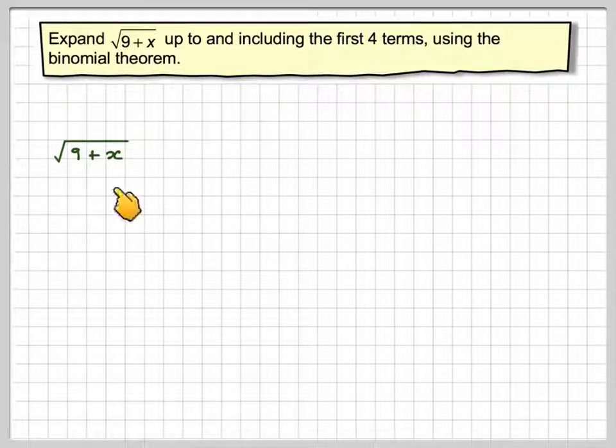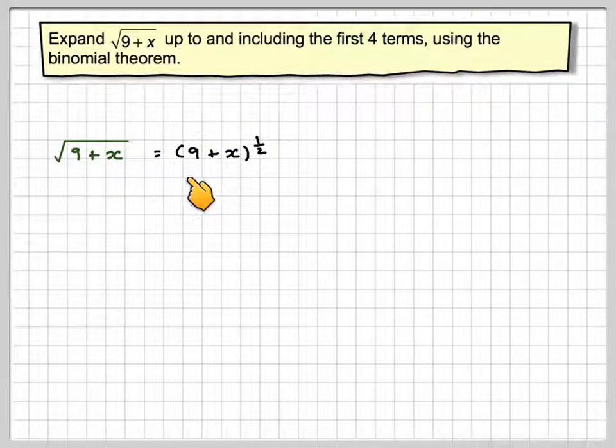So we've got a problem here, we haven't got 1 plus x, the square root of 1 plus x, but first of all let's just carry on with what we would normally do, and just write down 9 plus x to the power of a half.